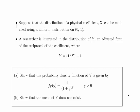Okay, in this presentation we are going to look at continuous random variables, in particular a uniform random variable and a variable that's based on a uniform random variable. Suppose that the distribution of a physical coefficient X can be modeled using a uniform distribution on the interval 0 to 1. A researcher is interested in the distribution of Y, which is an adjusted form of the reciprocal of the coefficient X.